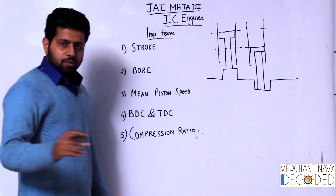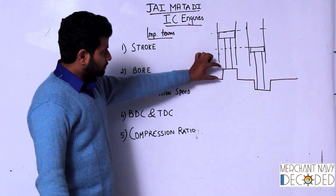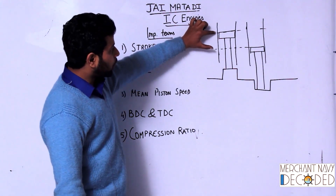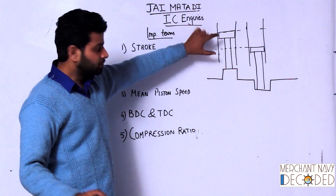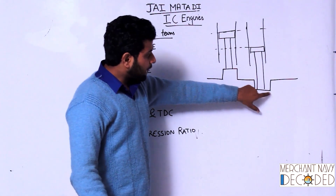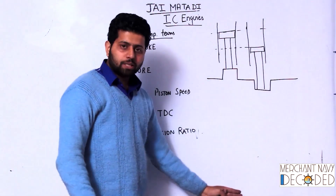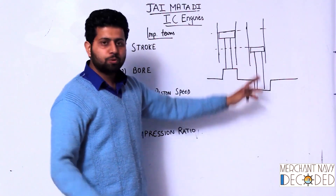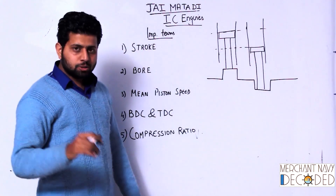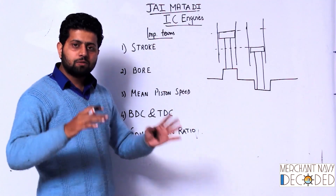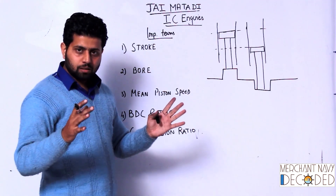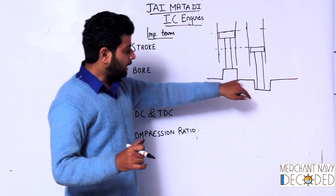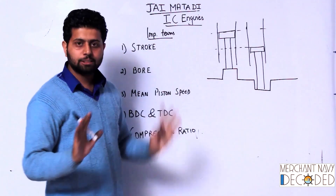You can see the crank web is at the topmost position, so the piston is at the topmost position it can achieve. When the crank web is at the bottommost position, the piston is at the lowermost position it can reach. So BDC and TDC are the two farthest positions — one nearest to the crankshaft and the other farthest from the crankshaft.